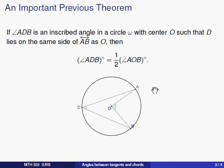The theorem says if ADB is an inscribed angle in a circle omega having center O, then D lies on the same side of the line passing through A and B as the center. Then the degree measure of ADB is going to be one half the degree measure of angle AOB.